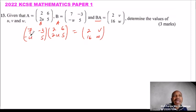From there, then we multiply. 7 times 2, that is 14, 14 minus 6U, so we have 14 minus 6U. 7 multiplied by 6 is 42, plus minus 3 times 5 is 15, minus 15, so 42 minus 15 will give you 27.